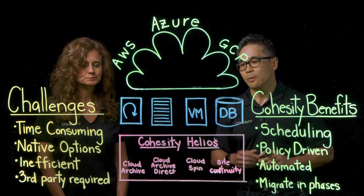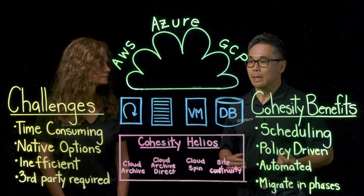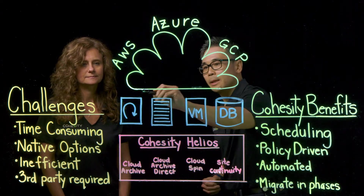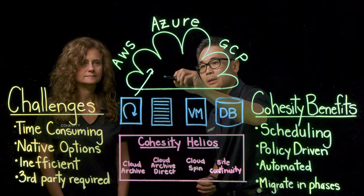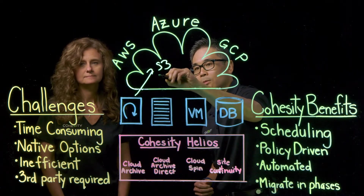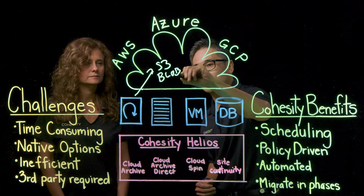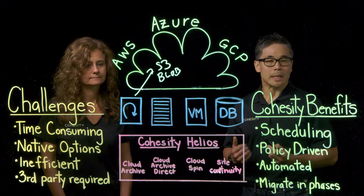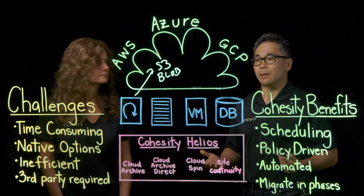Cloud Archive works with our backup product and allows you to move your backup data to the cloud based on retention policies. You can move it into your S3 storage buckets or your Azure Blob buckets as well. It makes it super easy, and if you do need to get access to that data, you just restore it into a cloud instance.